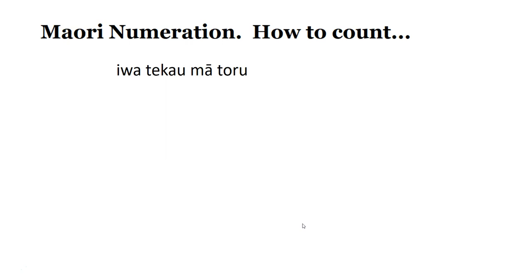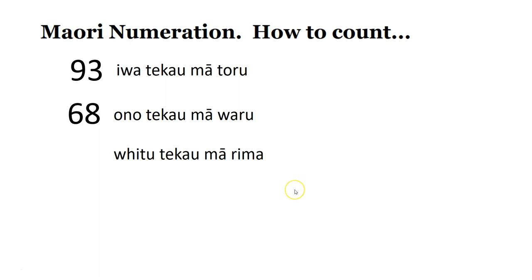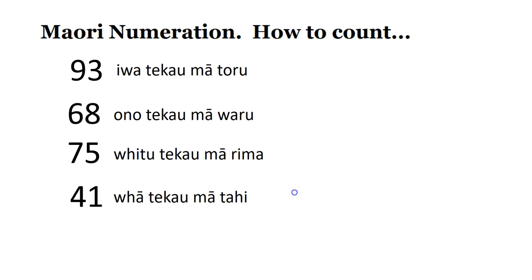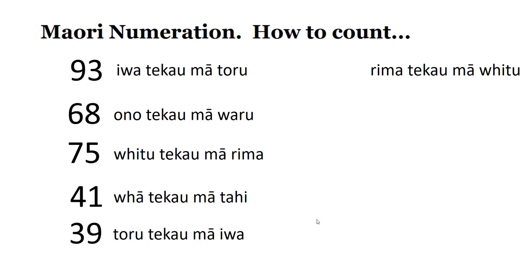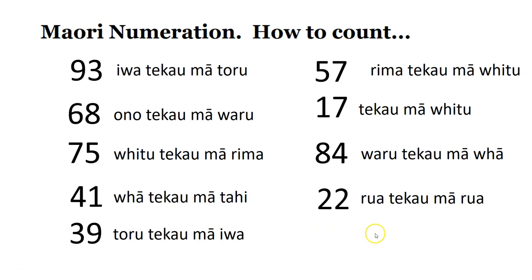Let's try again — I'll give you the words in Māori and you say it in English. Iwa te kau ma toru — ninety-three. Ono te kau ma waru — sixty-eight. Whitu te kau ma rima — seventy-five. Whā te kau ma tahi — forty-one. Toru te kau ma iwa — thirty-nine. Rima te kau ma fitu — fifty-seven. Te kau ma fitu — seventeen. Waru te kau ma whā — eighty-four. Rua te kau ma rua — twenty-two. Rima te kau ma ono — fifty-six.